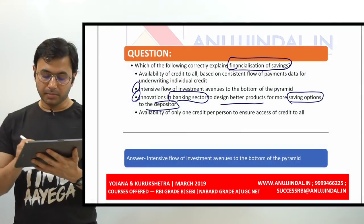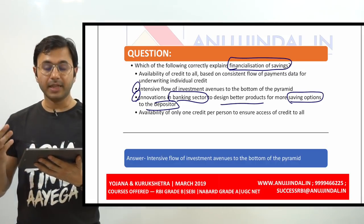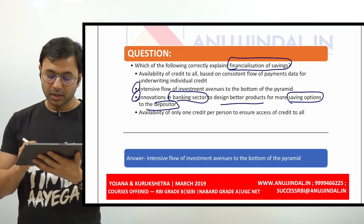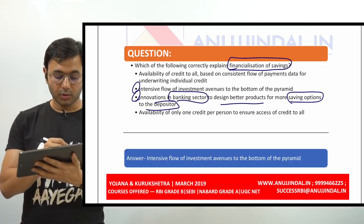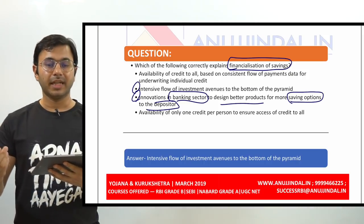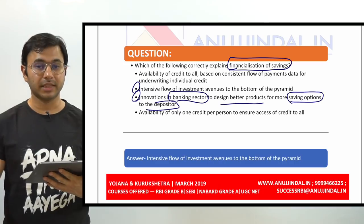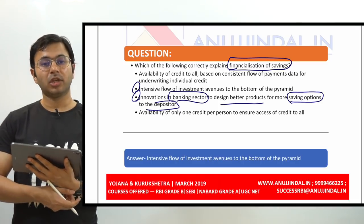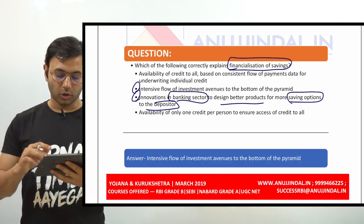The next question similarly asks about financialization of savings. You might be confused between options B and C now. The options include intensive flow of investment avenues to the bottom of the pyramid, and innovations in banking sector to design better products for more saving options for depositors. Both B and C are actually features of financialization of savings. Its purpose is to provide better investment avenues to people so they can better invest their savings, and to enhance the reach of these financial instruments to the bottom of the population pyramid — essentially poor and lower-middle-class people.